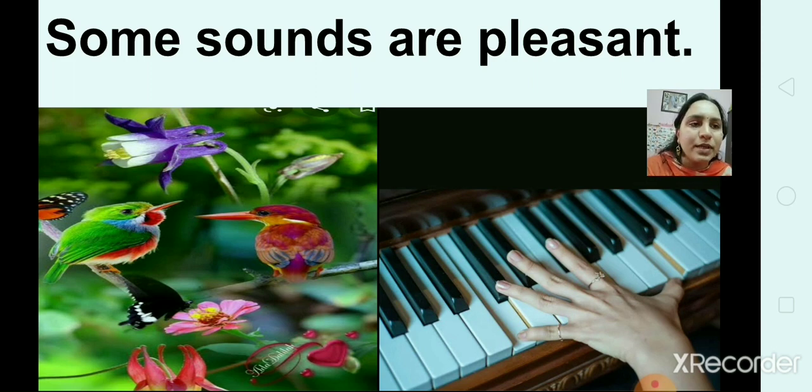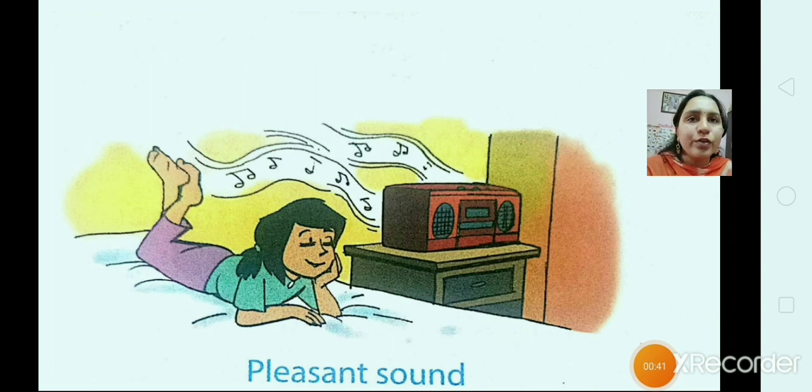So, some sounds are pleasant. The sound of a guitar and the chirping of a bird are pleasing to the ears. But some sounds are annoying. Loud and unpleasant sound is called noise. If music becomes too loud, it becomes noise. Here, you can see when a girl is listening to soft music. That is called pleasant sound. So, children, here we have discussed that some sounds are pleasant, but some sounds are unpleasant.